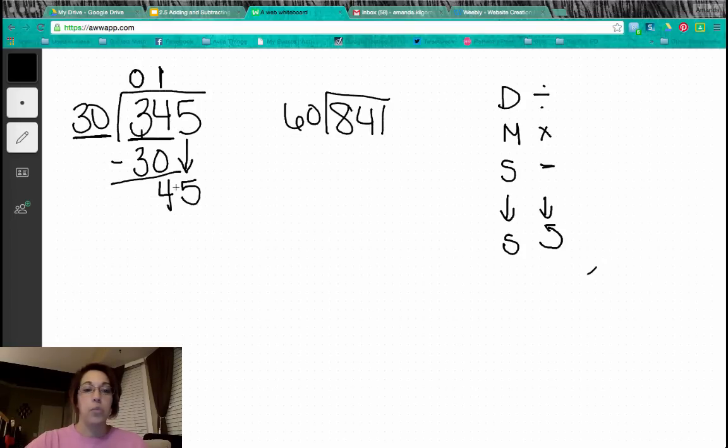So how many times will 30 go into 45? One. Five minus zero is five. Four minus three is one.